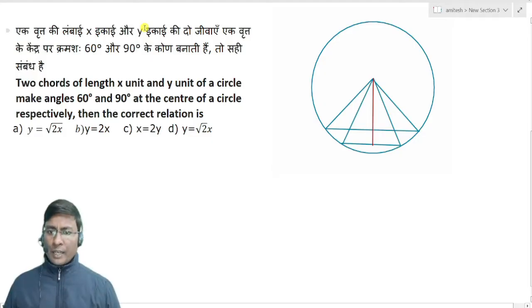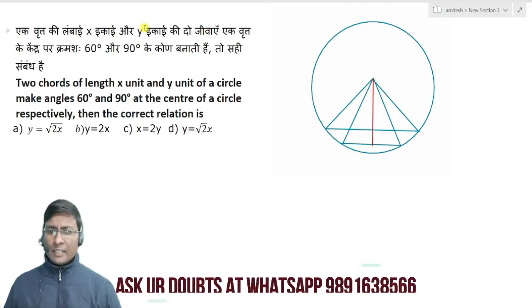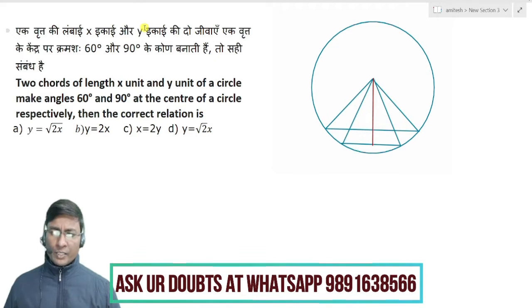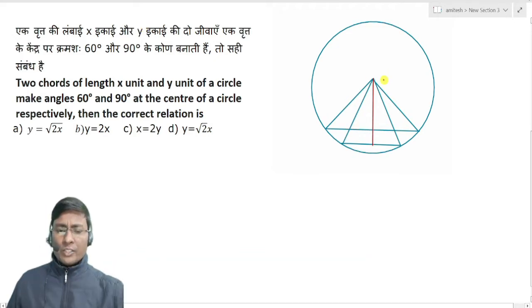Two chords of length x unit and y unit of a circle make angles 60 degrees and 90 degrees at the center of a circle respectively. Then the correct relation is: A circle with center C.